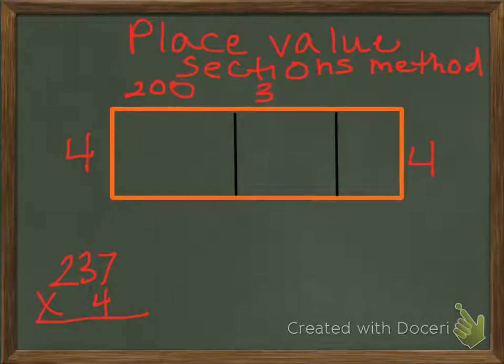So 200 plus 30 plus 7 would equal 237. Now we're going to do the same step.